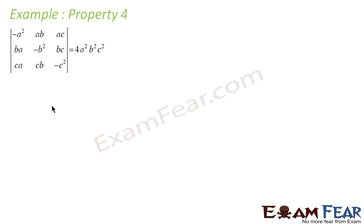Let's solve an example for property 4. We have to prove that a given determinant equals 4a²b²c². It looks complex because of all the a², b², c² terms. If we try to expand it directly, we can still find the answer, but it would require a lot of calculation.